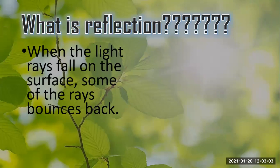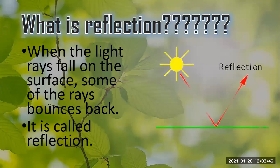Now we are going to learn another thing regarding light, that is reflection. What is reflection? When you stand in front of the mirror, you see your image — that image appears due to the reflection of light. When light rays fall on a surface, some of the rays bounce back, and this is called reflection of light. Here in the diagram you can see the sun giving out light rays, and when a light ray strikes a surface it bounces back.